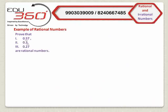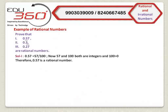Before solving these problems, we have to understand how we can prove a number is a rational number. Recall the definition: a rational number is a number which can be expressed in the form P by Q, where P and Q are integers and Q is greater than 0. Now consider the first problem. The decimal expression 0.57 is a terminating decimal. So, just by removing the decimal point, that is by expressing it in the form 57 by 100, we can prove that it is a rational number, as both 57 and 100 are integers and the denominator 100 is greater than 0.